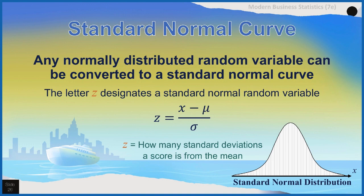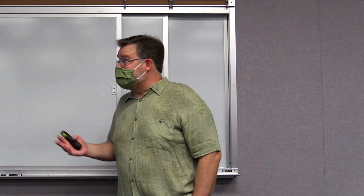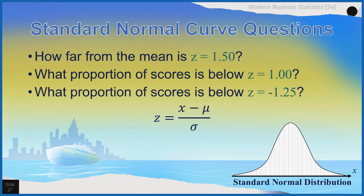We're going to put this to use as we learn about Z scores. If we wanted to answer a question like how far from the mean is a score with a Z equal to 1.50, we could answer that with the standard normal curve formula. Or what proportion of scores is below a Z of 1.00? Or what proportion of scores are below a negative 1.25? All of those questions can be answered with our standard normal Z score formula. I want to show you how the book recommends we do this, and then I'll show you a much easier way to get there.